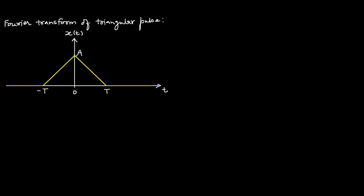This triangular pulse is basically a combination of straight lines. The slope of the straight line from minus infinity to minus T is 0, because it is a horizontal line. Similarly, from plus T to infinity, the slope is 0 again. From minus T to 0, the slope is increasing, and we can find out this slope through a right angle triangle.